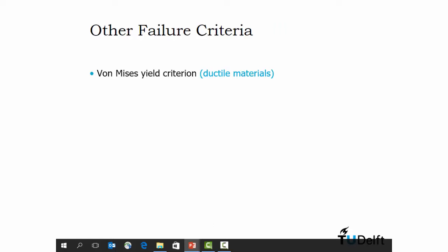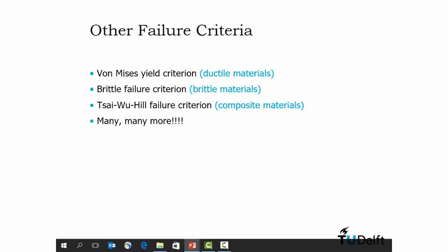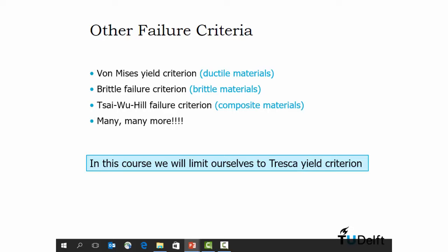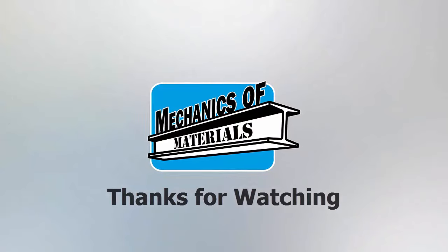So, there is that von Mises yield criterion for ductile materials. It's in the textbook if you're interested to look at it. There are brittle failure criterion for brittle materials that relate more to the normal stress. There's, for composites, one of the most common ones is a Tsai-Wu, or the Tsai-Wu Hill, or the Tsai Hill. There's many different variations on it. But, there are many, many, many more. Especially when you get into composite materials. There are hundreds of failure criteria trying to describe the complex failure in composites. So, as I said, in this course, we are going to limit ourselves to the Tresca yield criterion. That's the only failure criteria that I'll ask you in the exam. Just a word of a warning. If you, when the old exams get posted up, in previous years we did also cover von Mises stress. So, you might see a question that references the von Mises stress criteria. Just ignore that.